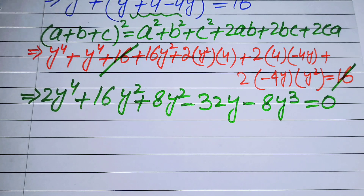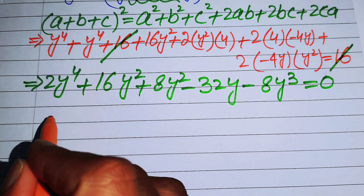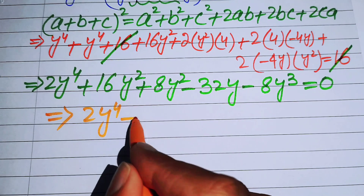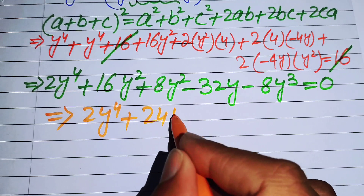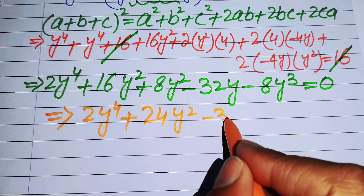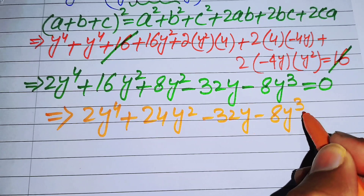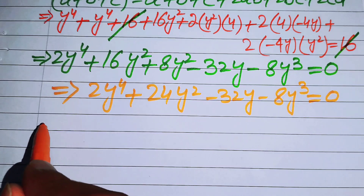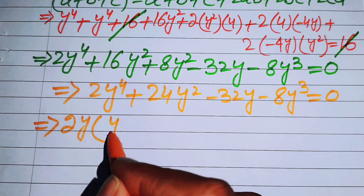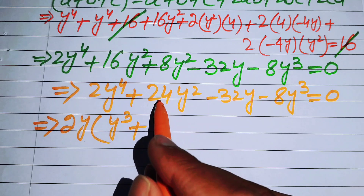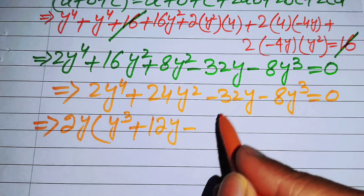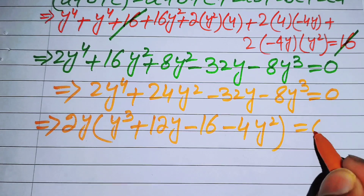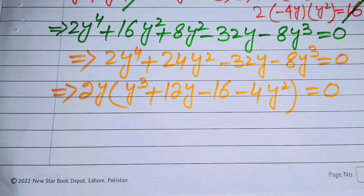Simplifying and combining like terms: 2y^4 - 8y^3 + 24y^2 - 32y = 0. We factor out 2y to get 2y(y^3 - 4y^2 + 12y - 16) = 0. This gives us two cases.